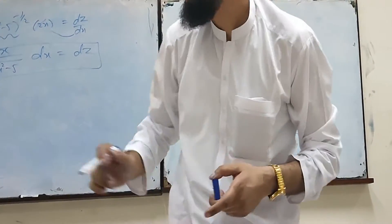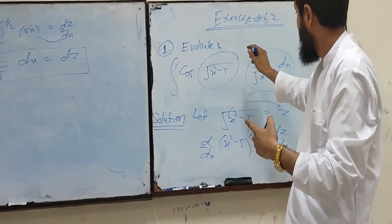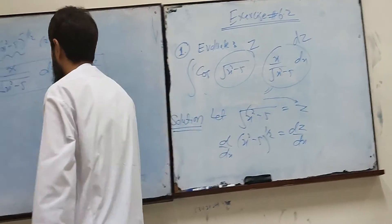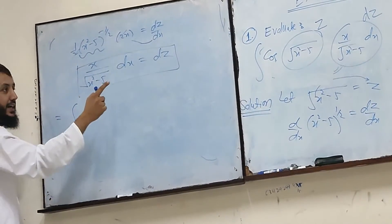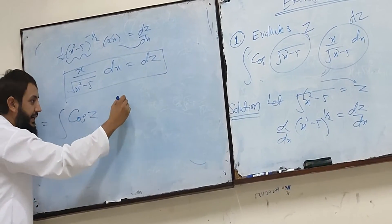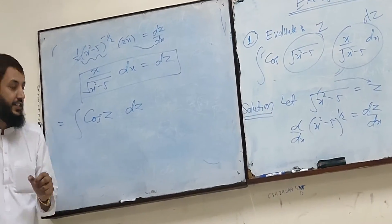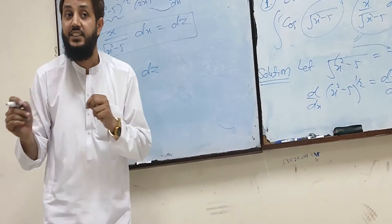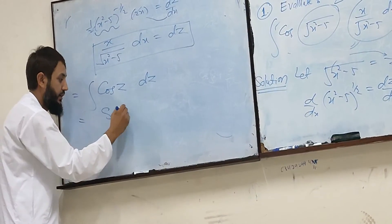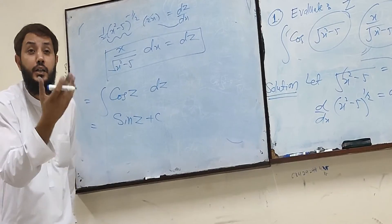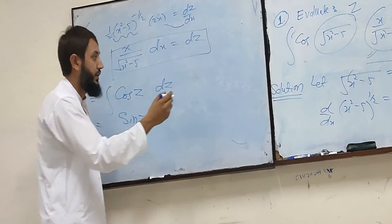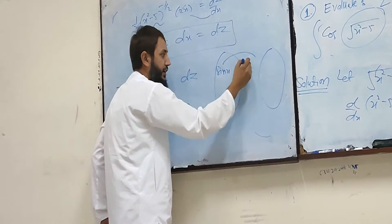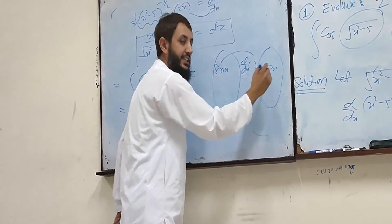The derivative is Z. Cosine Z integral is sine Z.